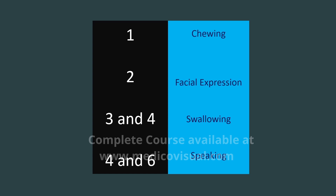If you remember my pizza-eating video, first I chew the pizza and as I chew that yummy pizza, my facial expression changes — I smile. Then I chew, then I smile, then I swallow the pizza, and then I speak and say, 'Wow, this pizza is yummy!' In this way, through this cringy mnemonic, you can remember the most important derivatives of the pharyngeal arches forever.